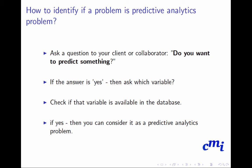If you are not so sure, you can ask a direct question to your client or collaborator: do you want to predict something? If the answer is yes, then ask which variable you want to predict. Do you want to predict whether next year is going to be a drought year? Do you want to predict the quality of the product? Then you check if the variable that they want to predict is available in the database. Because sometimes they want to predict something, but that variable is not really available in the database. Rather, they want to use some kind of proxy variable to predict another thing.